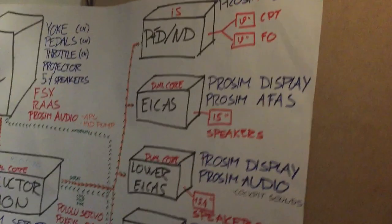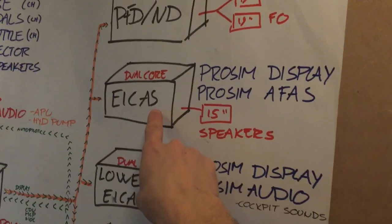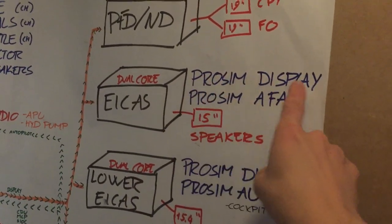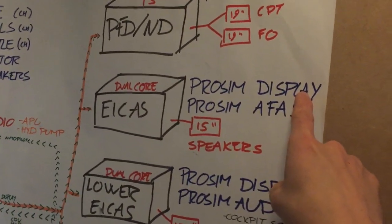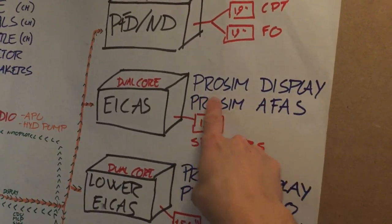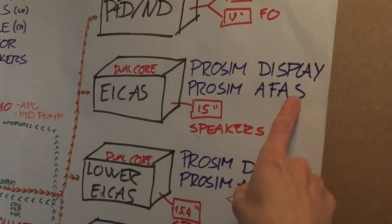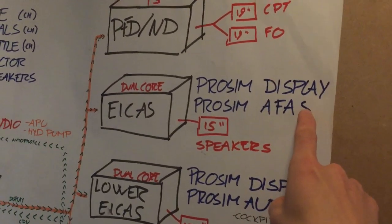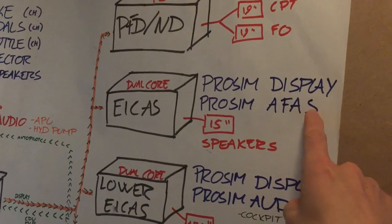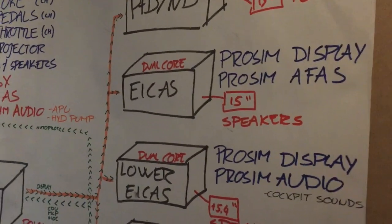The second computer is the EICAS — the main engine instrument — running ProSim display to show the instrument and also ProSim AFAS. I'm not sure what AFAS stands for, but it's a program that plays cabin sounds. So when I program a flight from Amsterdam to Copenhagen...